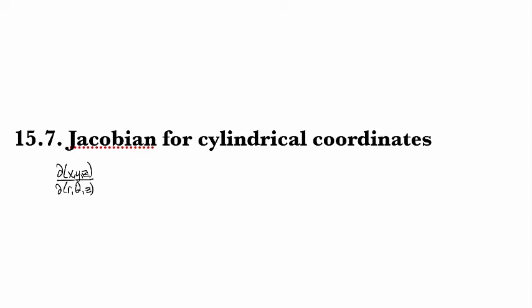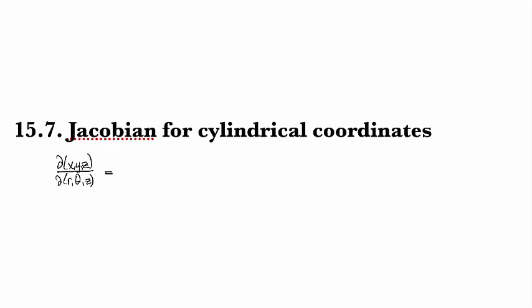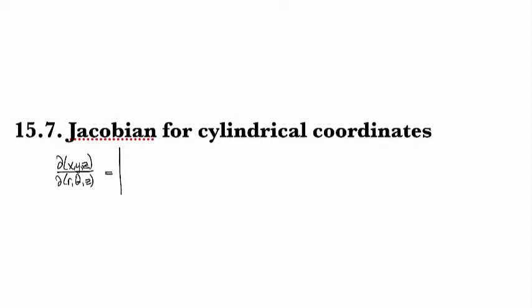So here's our symbology for the Jacobian. And so we set this one up, remember, as the determinant of a matrix, where we have the partial derivatives. So we'll do the first partial of, oh, here, let me write off to the side what exactly we're doing.